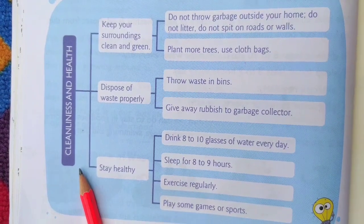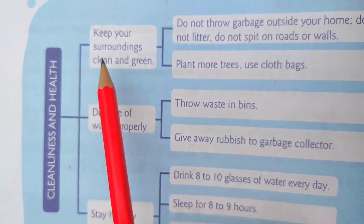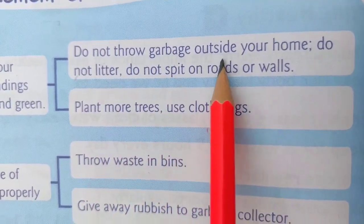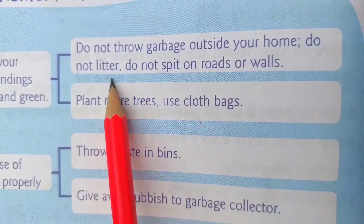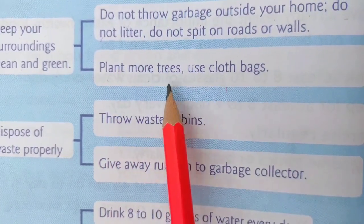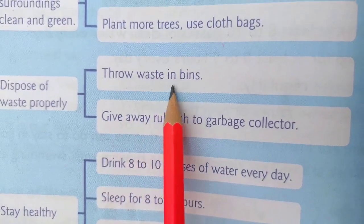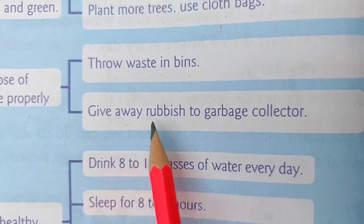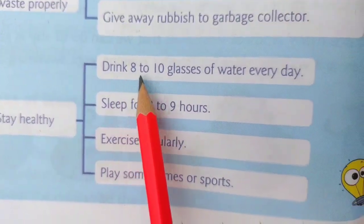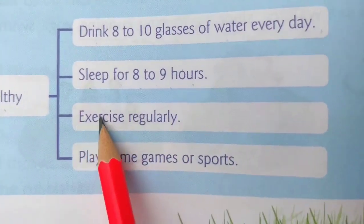Points to remember — Cleanliness and Health: Keep your surroundings clean and green. Do not throw garbage outside your home. Do not litter. Do not spit on roads or walls. Plant more trees. Use cloth bags. Dispose of waste properly — throw waste in bins and give rubbish to the garbage collector. Stay healthy: drink 8 to 10 glasses of water every day, sleep for 8 to 9 hours, and exercise regularly.